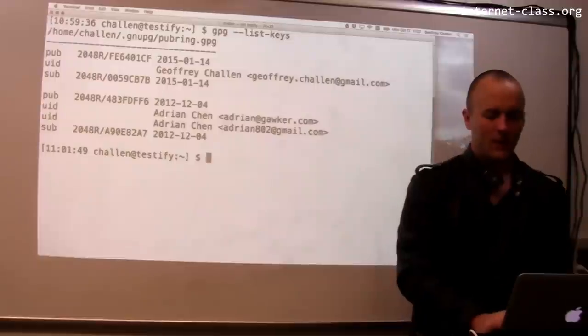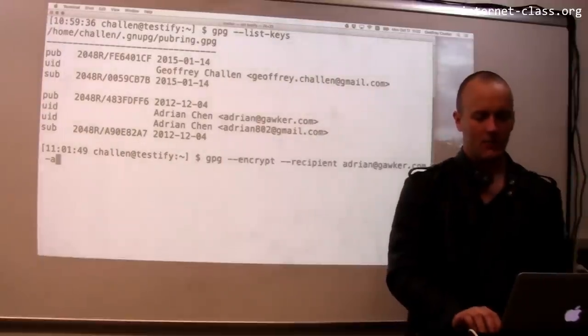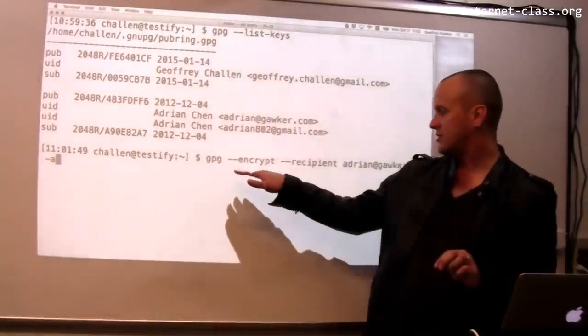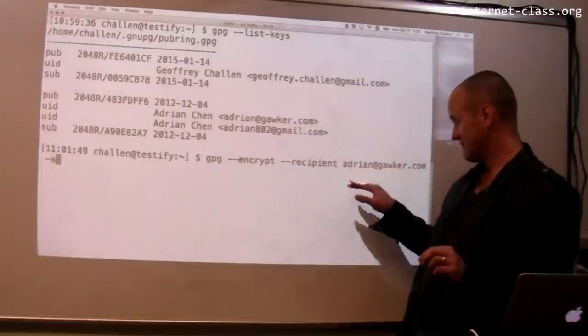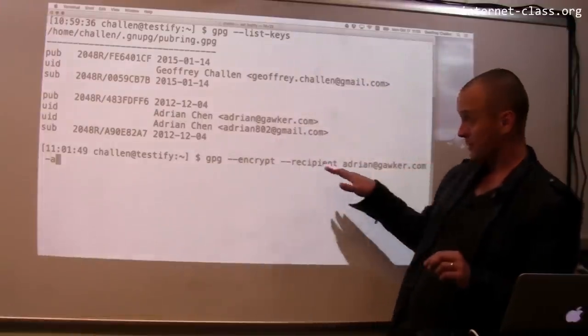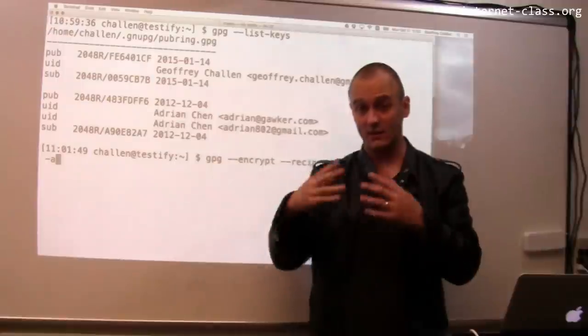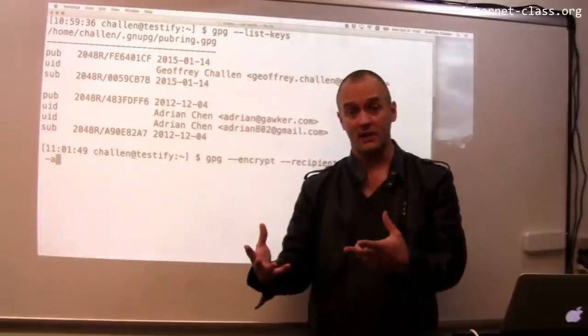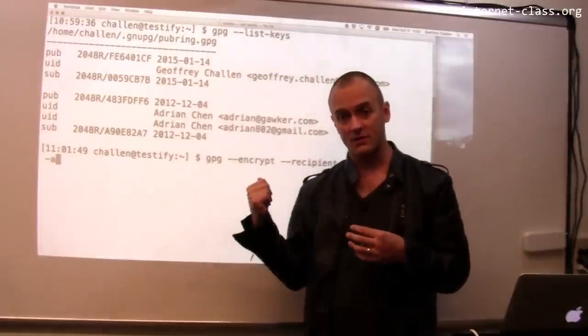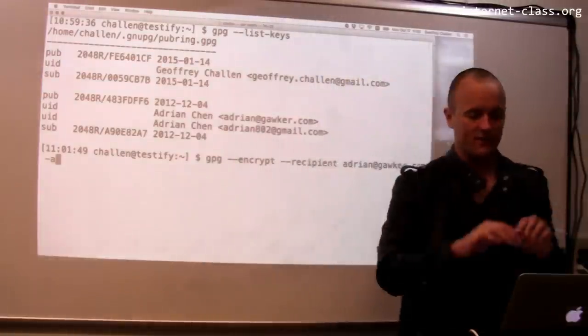Now what I'm going to do is I'm going to use GPG and what I'm telling GPG to do is I'm telling it to encrypt a message and to encrypt it for this particular recipient. So this is AdrianNichAugger.com, so it's going to use this particular key that it's loaded to perform the encryption. When I'm finished, what I'm going to have is I'm going to have my ciphertext.